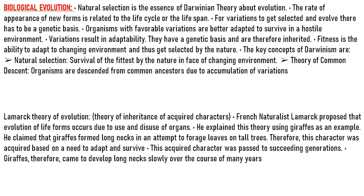In this lecture I'll be talking about the rest of the part starting with biological evolution. Evolution by natural selection is a true sense which would have started when cellular forms of life with differences in metabolic capability originated on the earth. The essence of Darwinian theory about evolution is natural selection. The rate of appearance of new forms is linked to the life cycle or lifespan. Microbes that divide fast have the ability to multiply and become millions of individuals within hours.